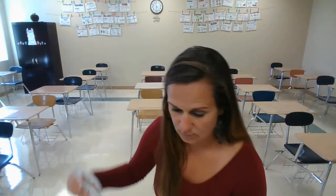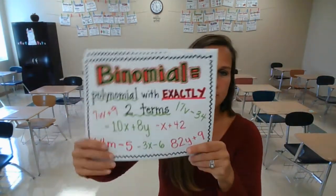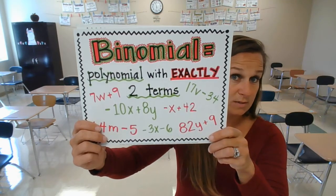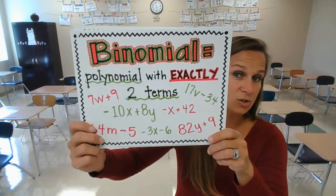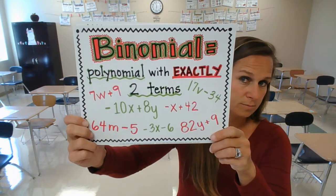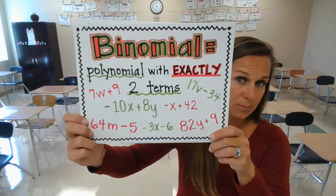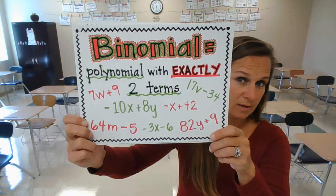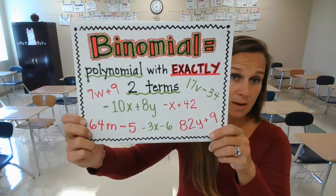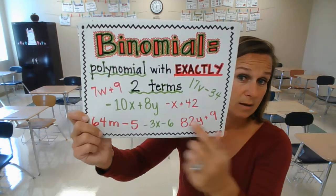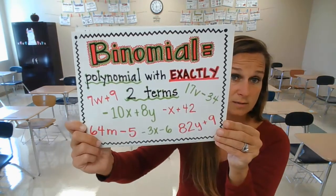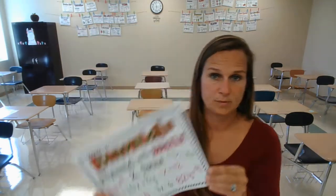And we have a binomial — bi meaning 2. So a binomial is a polynomial with exactly two terms. All of these are examples of binomials. Negative 10x plus 8y: two terms, separated by an addition sign, each consisting of a coefficient and a variable.